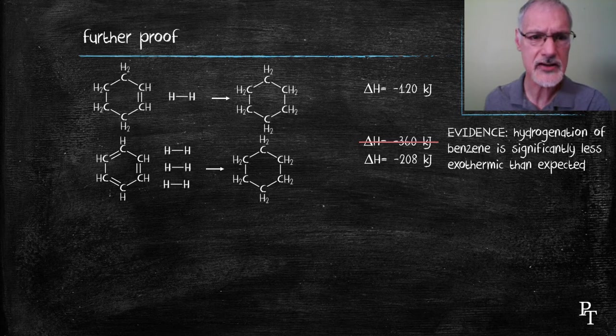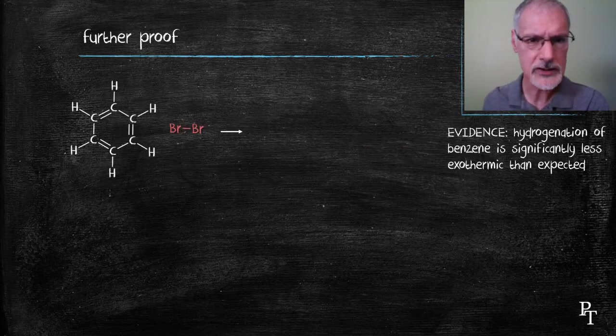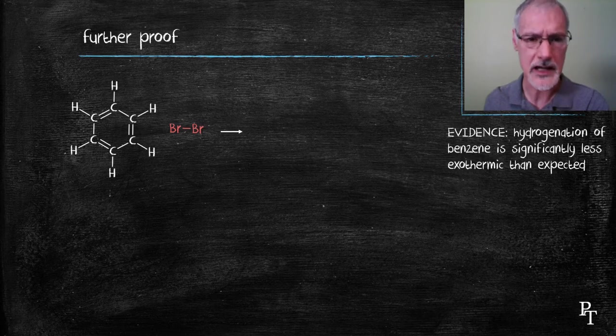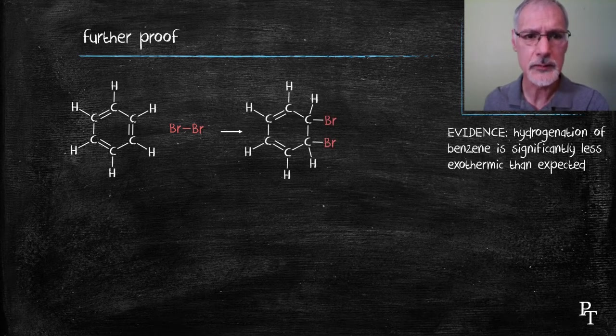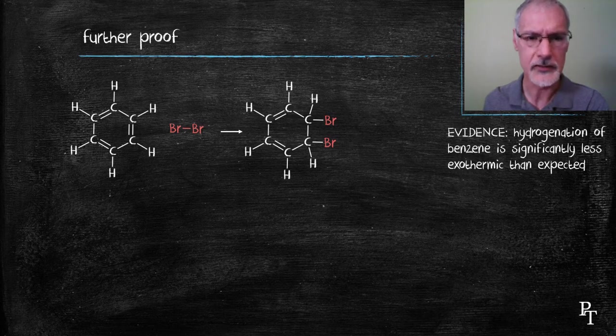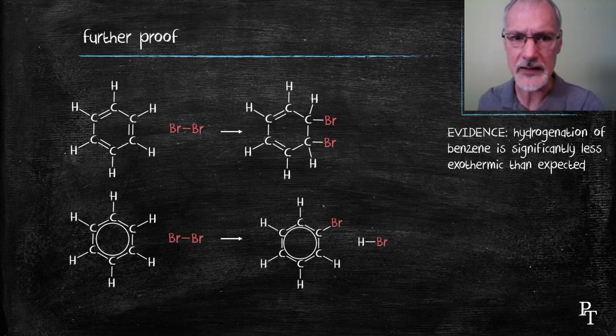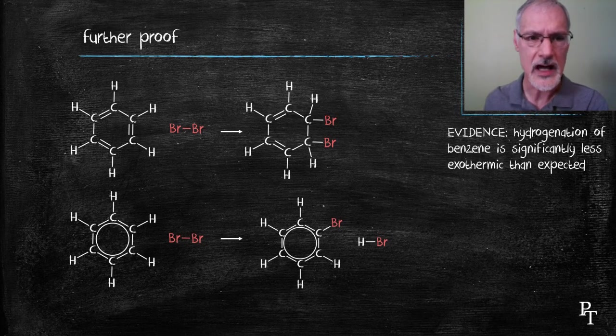Also, if we take a look at the reaction of benzene with halogens. If we have multiple bonds, we would expect addition reactions. We would expect the multiple bond to open up and bromine would attach itself or add itself to the molecule. Actual experimental evidence indicates a substitution reaction takes place instead, where the hydrogens come off and the bromine hooks on.